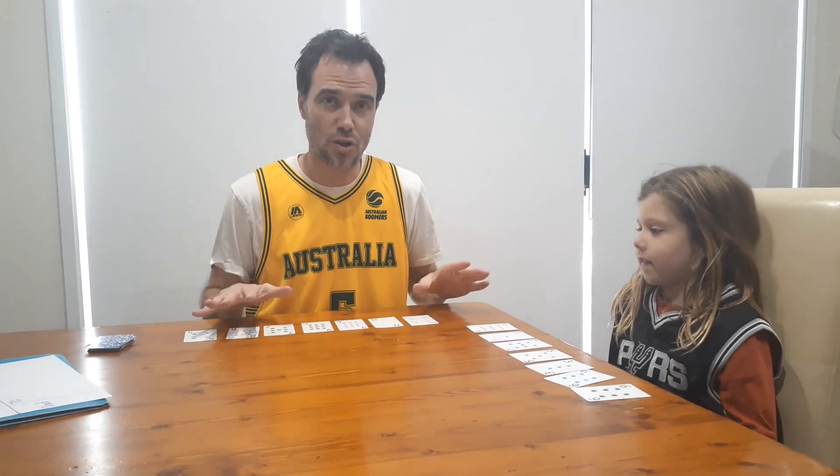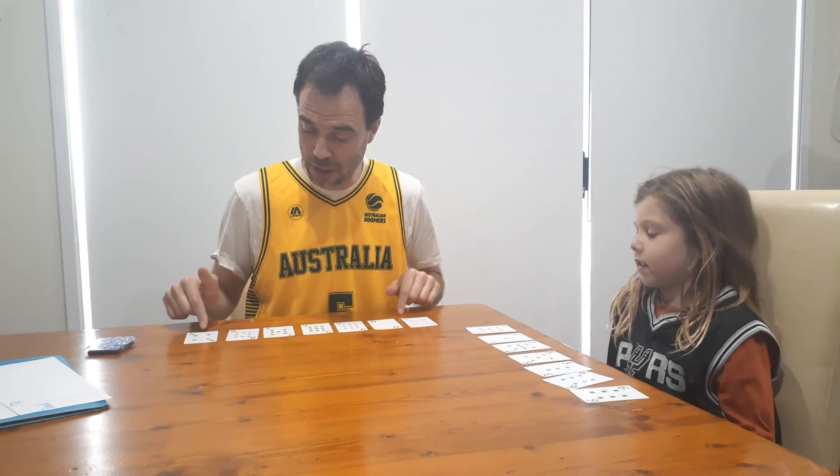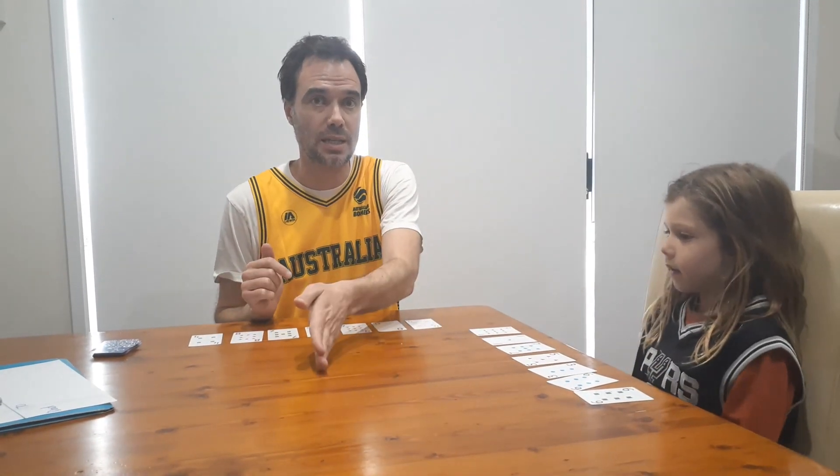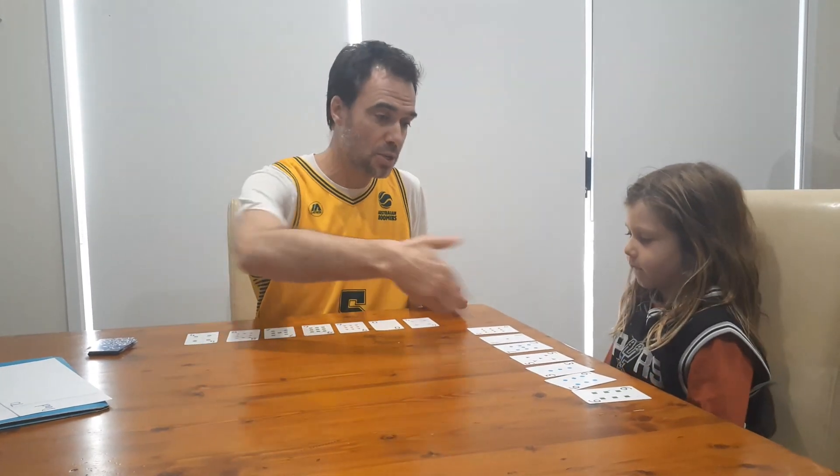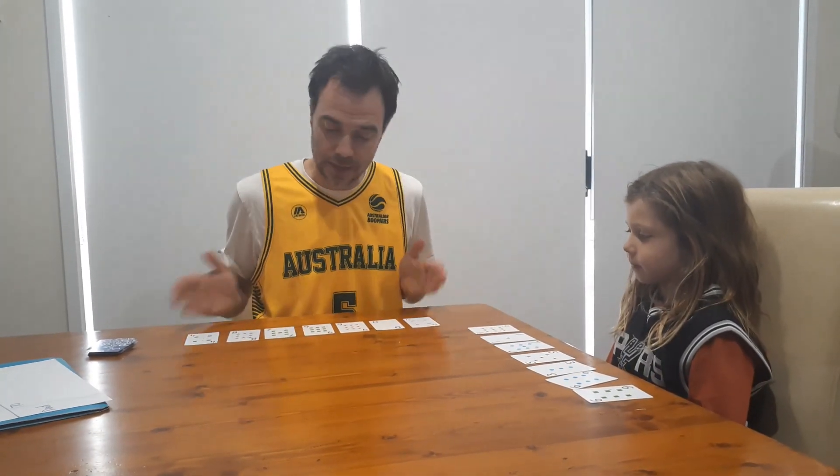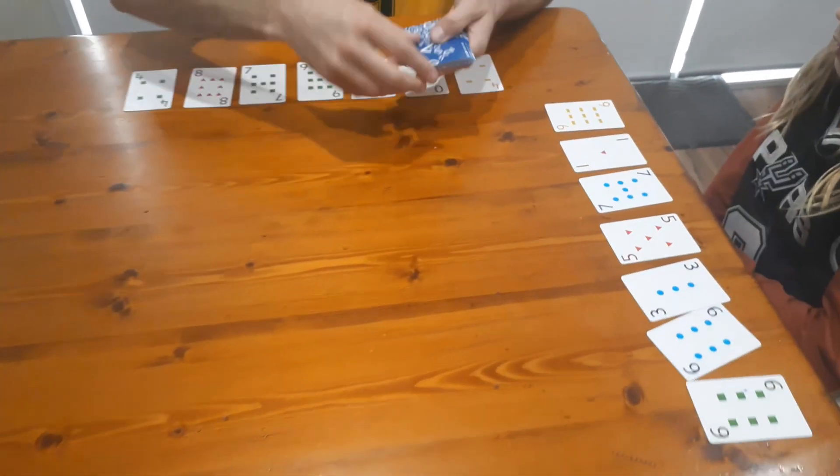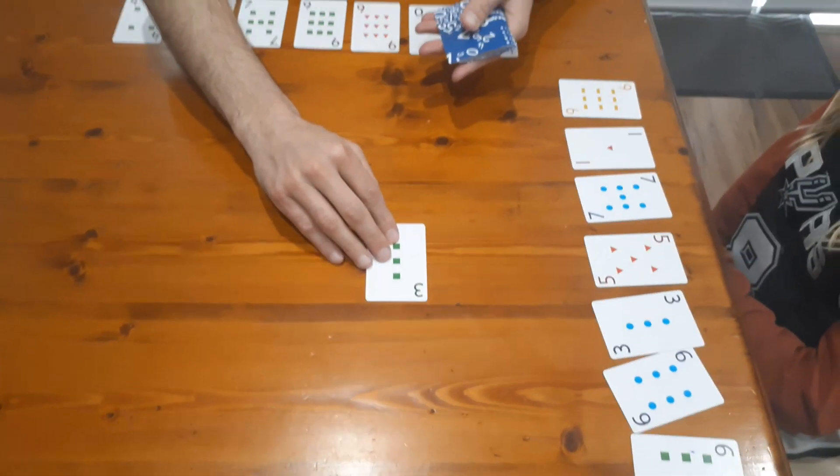The deck should be from zero to nine. We've got school-friendly cards, but if you've got a regular deck, Queens can be zeros and aces can be ones. To start the game, each player is dealt seven cards face up in front of them, and then you put one card in the middle of the table.